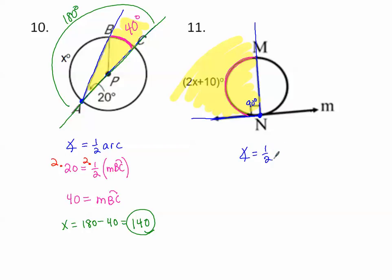Angle equals half of arc. Angle is 90 equals half of the arc measure, 2X plus 10. Now I can multiply 2 to both sides to get the arc measure. That's a 180 degree arc right there. Now I can subtract 10, and then divide by 2. And there we have it.